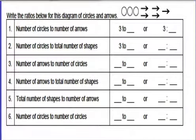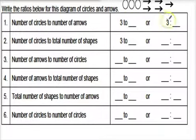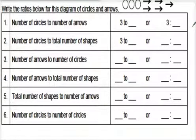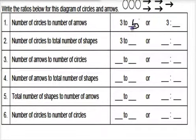Now find this page in your book. You're going to write the ratios for this diagram of circles and arrows. You'll write the number of circles to the number of arrows — you've got it two ways: '3, 2' and '3 colon' the number. There are one, two, three circles and one, two, three, four, five arrows. So you have 3:5, read as 'three to five.' The second one is circles to total shapes — three circles and five arrows gives eight shapes total, so 3:8. Arrows to circles is 5:3. Arrows to total shapes is 5:8. Total shapes to arrows is 8:5. And circles to circles is 3:3.